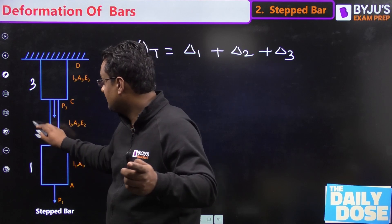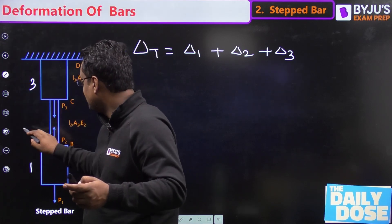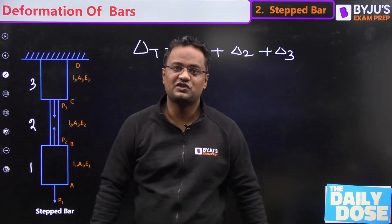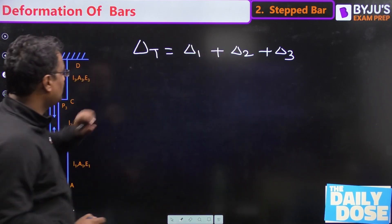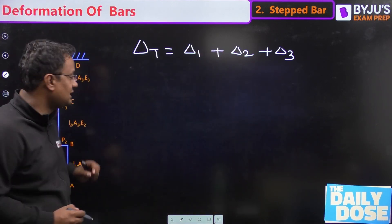Of course guys, the total elongation of Abhinav Negi from childhood up to now is elongation of my legs plus upper body plus my head. Similarly here, delta total will be delta 1 plus delta 2 plus delta 3.